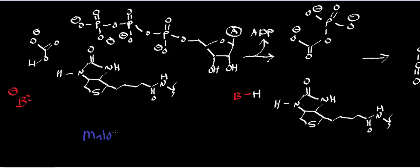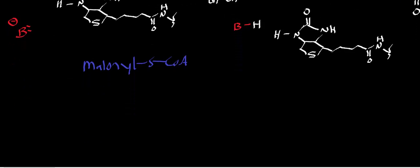The molecule we're going to look at is malonyl-S-CoA. All malonyl-CoA is, is a carboxylated version of acetyl-CoA. So if this is our coenzyme A, this would be acetyl-CoA. When we have malonyl-CoA, it has this extra carboxylate group. That molecule is malonyl-CoA, and that's the molecule we use to biosynthesize fatty acids.